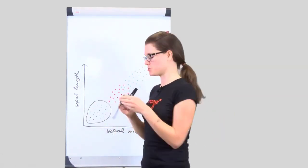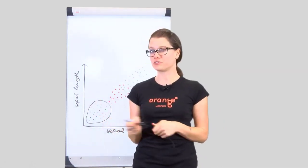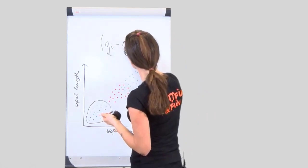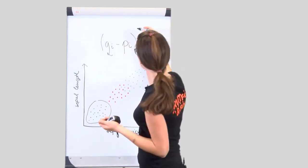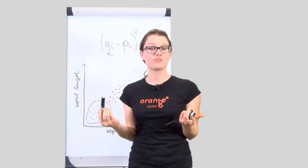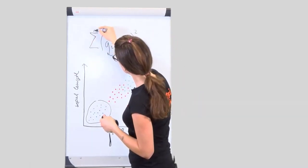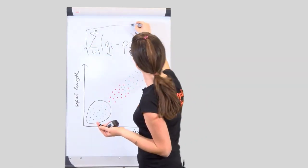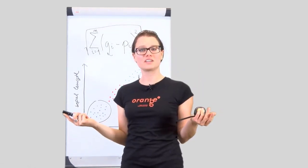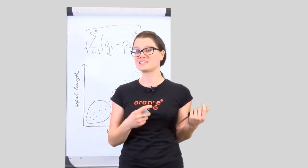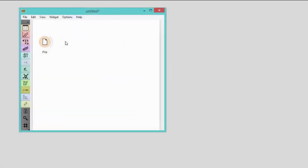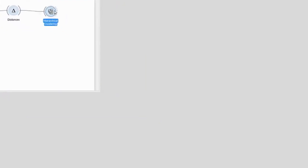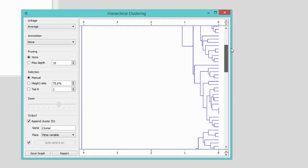How does this clustering work? We would like to group the flowers together so that those with similar leaf measurements belong to the same group. For two flowers, we can check each measurement, compute the difference, square it to make sure it's positive, and then sum the squared differences across all four measurements. At the end, we can compute the root of the sum to match the original measurement units. I've just reinvented the Euclidean distance. The smaller the distance, the larger the similarity. Flower distances can now be used to construct hierarchical clustering — connect the hierarchical clustering widget with the distances widget.